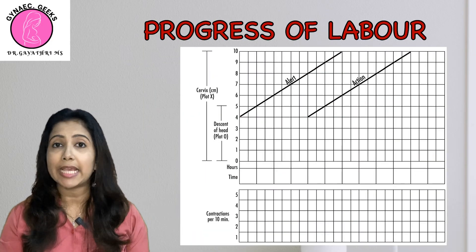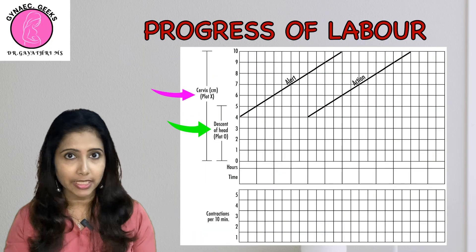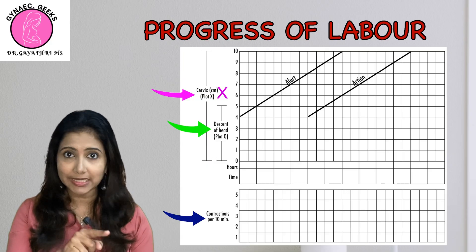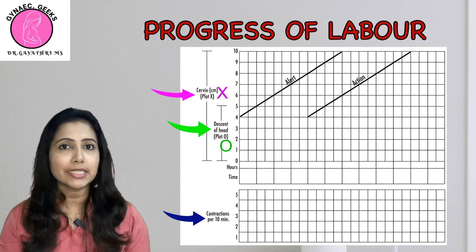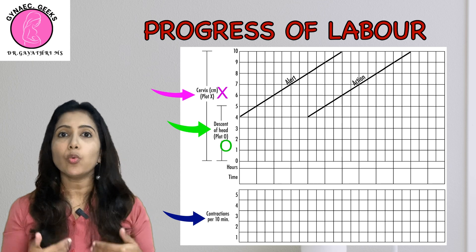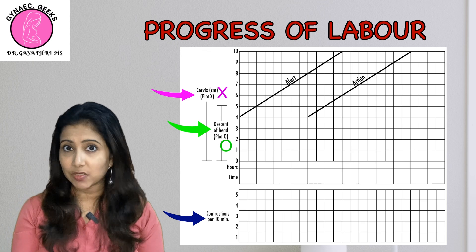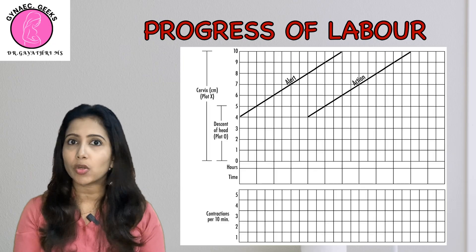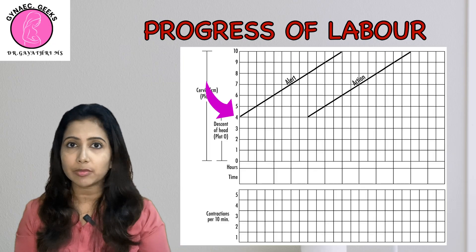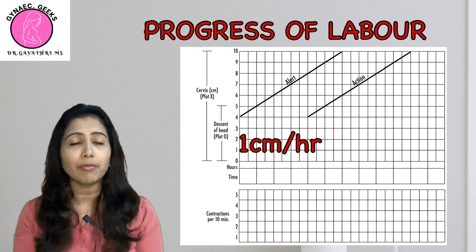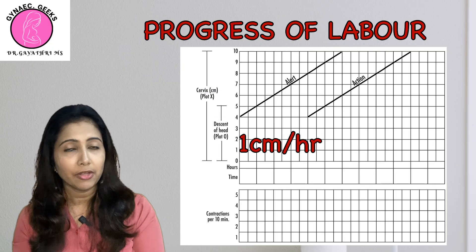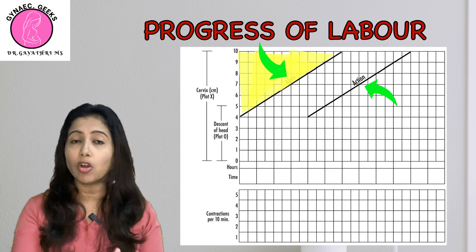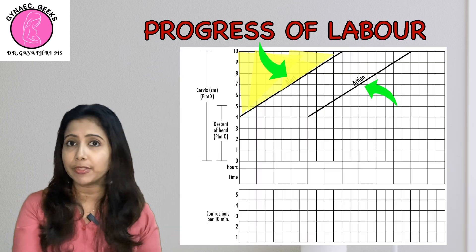Next is the progress of labour, assessed in terms of cervical dilation, descent of head, and uterine contractions. Dilation is denoted using an X and descent of head is marked using a small O. A repeat per vaginal examination is done every 4 hours. In the modified WHO partogram, plotting starts once dilation reaches 4 cm, and the minimum rate of progress should be 1 cm per hour. Anything to the left of the alert line is normal.